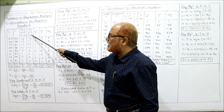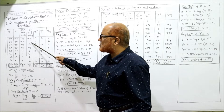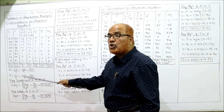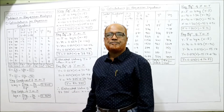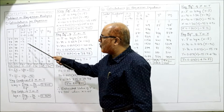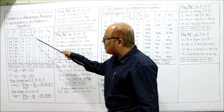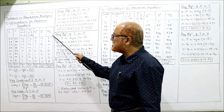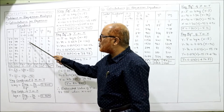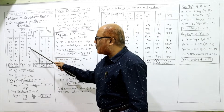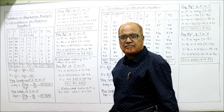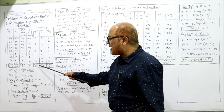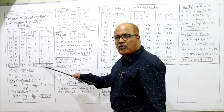Similarly, calculate small y as Y minus 79: 77−79=−2, 78−79=−1, 75−79=−4, 78−79=−1, and so on. The total summation y must also be 0. Now compute x-squared: 3²=9, 2²=4, 1²=1, and so on. Compute y-squared: 2²=4, 1²=1, 4²=16, and so on. For xy, multiply corresponding values: 3×2=6, 2×1=2, 1×4=4, noting that minus×minus becomes plus. The totals are: summation x²=36, summation y²=44, summation xy=24.